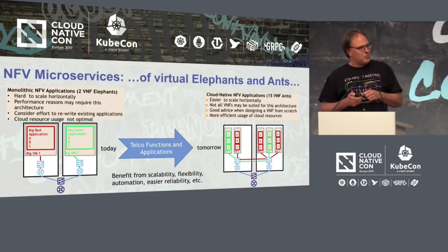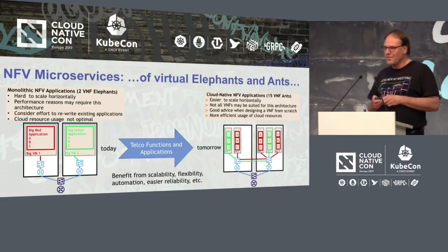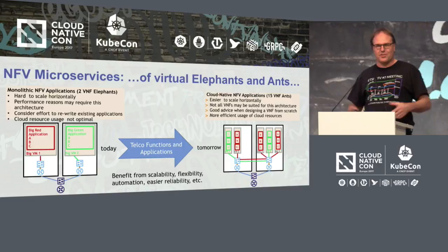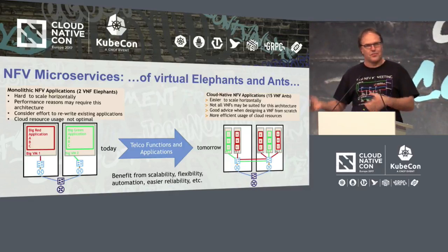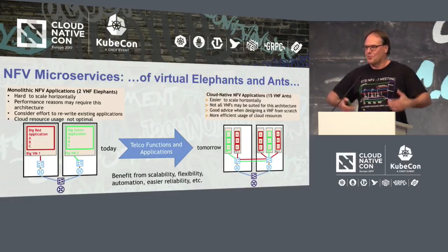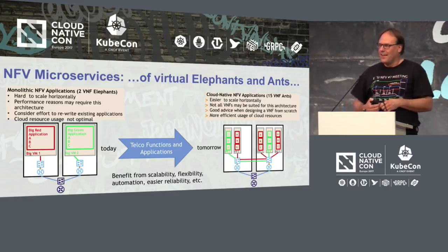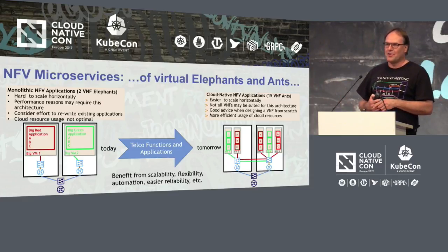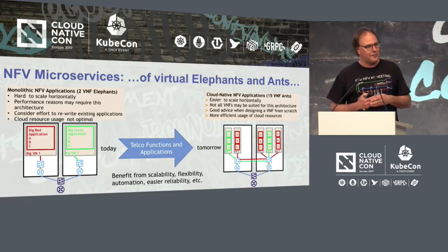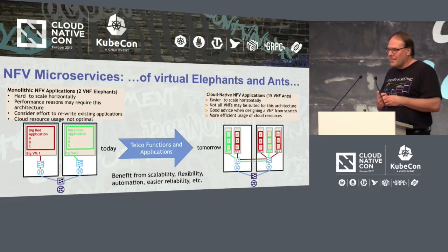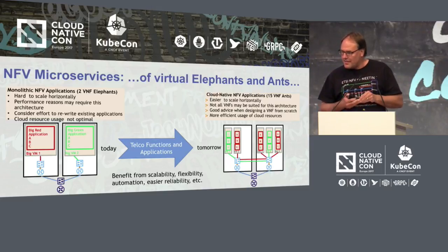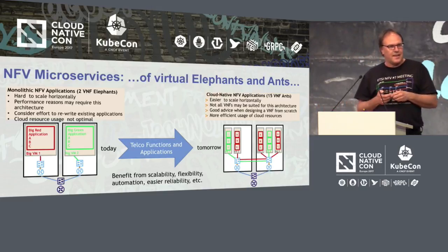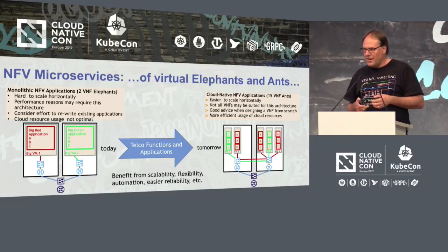We heard there's this cool thing called cloud native, and we want to go from this massive elephant, which we have virtualized now — and by the way, they are not virtualized right now, we are in the process to virtualize them. From this massive elephant, for reliability purposes, probably two massive elephants in the network, we would love to go to a much more cloud native way of handling things, to have better reliability and better resource usage.